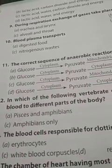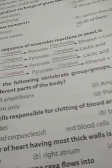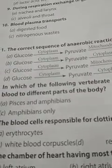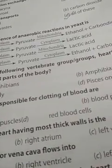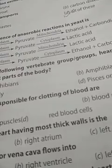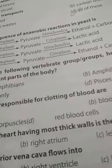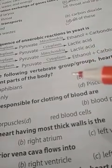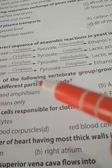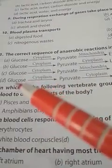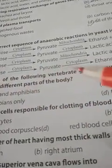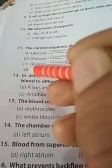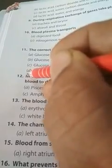Question number 11: the correct sequence of anaerobic reactions in yeast — formation of pyruvate takes place as a result of glycolysis in the cytoplasm from glucose. In yeast, there is then formation of ethanol and CO2, also in the cytoplasm. So the cytoplasm converts glucose into pyruvate and pyruvate into ethanol plus carbon dioxide. The answer is option D.